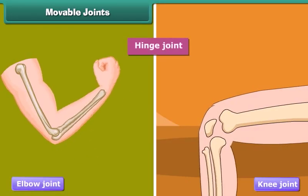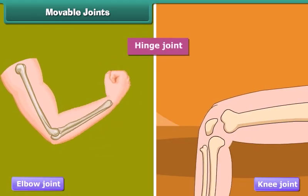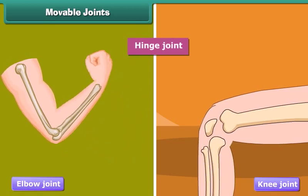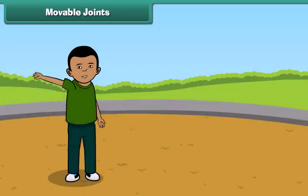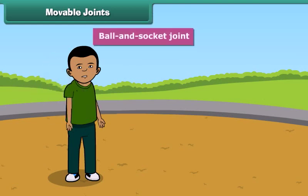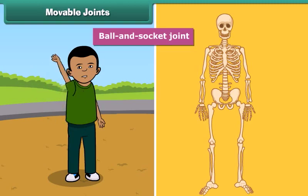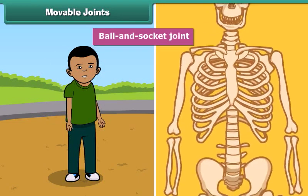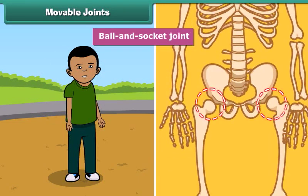Hinge joint: these are the joints which can be bent in only one direction. For example, the elbow joint and knee joint. The joints which join the bones to make circular movement possible are called ball and socket joints. For example, the bone in the upper arm is fitted to the bone in the shoulder by a ball and socket joint. Similarly, the thigh bone is fitted to the hip bone by a ball and socket joint.